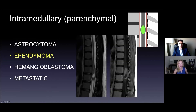The next case is lower in the spine, maybe in the conus — more well-defined and enhancing on sagittal post-contrast. We know it's intramedullary parenchymal because it's expanding the cord and the CSF spaces around it are gone. That's an ependymoma. Ependymomas are a little more common — 60–70% of intramedullary tumors — and typically seen in slightly older patients.